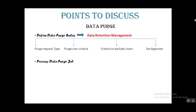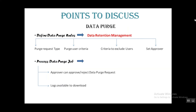The particular tool we use to define data purge rules is Data Retention Management, which is available in the Admin Tools in SuccessFactors. For processing the data purge job, the first sub-step is that when we schedule the job, it goes to an approver who can approve or reject the request. After approval and processing, logs are available to download — from the log we can identify which users were purged and which were not due to errors. The tool used for processing is Maintenance Monitor, also available in the Admin Tools.